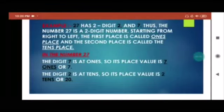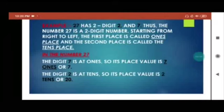Here is an example. 27 has two digits: 2 and 7. The number 27 is a two-digit number. Starting from right to left, the first place is called the ones place and the second place is called the tens place. In the number 27, the digit 7 is at the ones place, so its place value is 7 ones, or 7. The digit 2 is at the tens place, so its place value is 2 tens, or 20.